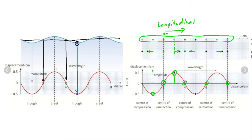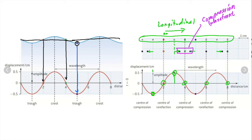In some places there are more particles than usual — this is called a compression. That's usually the wave front we talk about when discussing a wave moving along, kind of like the crest. In some places there are fewer particles than usual — that's called a rarefaction. The rarefaction means there's more space than usual, and that's because of the movement of the particles.